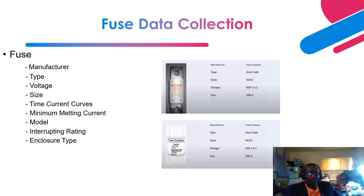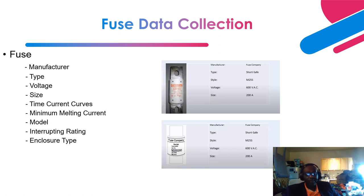Next is data on fuses. For a fuse, you need the manufacturer, type, voltage, size, TCC curves, minimum melting current, model, interrupting rating (symmetrical), and enclosure type — where the fuse is located. On the right-hand side is a typical fuse example showing the manufacturer, type, style, voltage, and size — an example of what you are collecting.